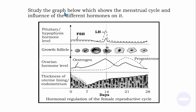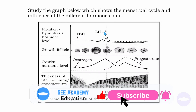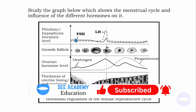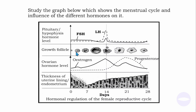Question C: study the graph below which shows the menstrual cycle and the influence of the different hormones on it. Here we have the hypophysis hormone level — the hormones secreted by the pituitary gland. We have FSH, which is follicle stimulating hormone, and LH, the luteinizing hormone. As FSH is secreted, the follicles start to grow, which is why it's called follicle stimulating hormone.